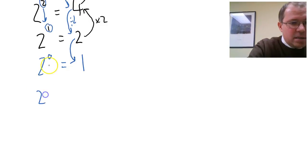Let's decrease the 0 by 1 again. So 2 to the power minus 1, and we divide by 2. 1 divided by 2 is 1 half. Let's decrease the power again by 1—it's got 1 smaller, minus 2.